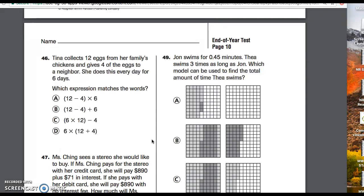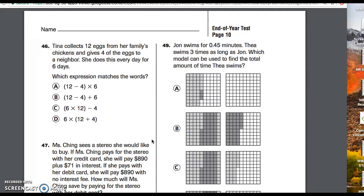Number 46. Tina collects 12 eggs from her family's chickens and gives four of the eggs to a neighbor. She does this every day for six days. Which expression matches the words?